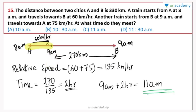Train B starts at 9 am, and they meet after 2 hours. So the right answer is 11:00 am.